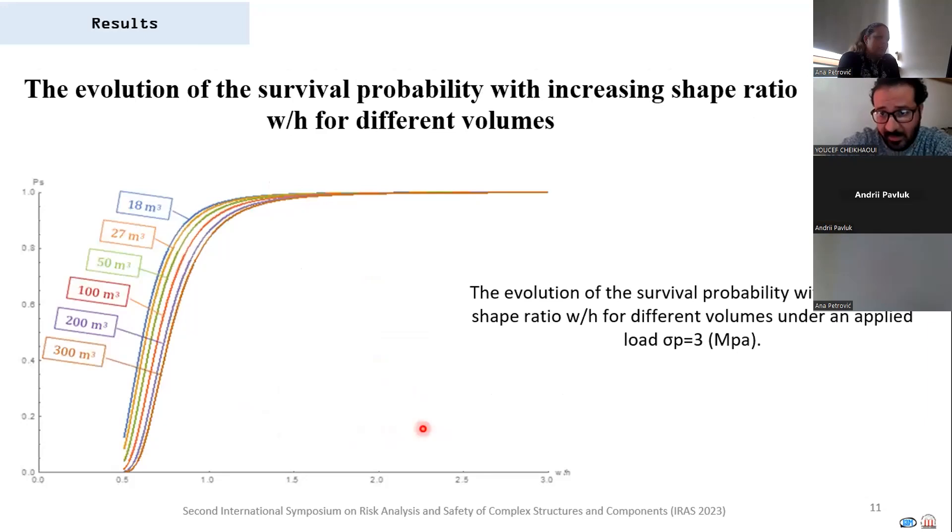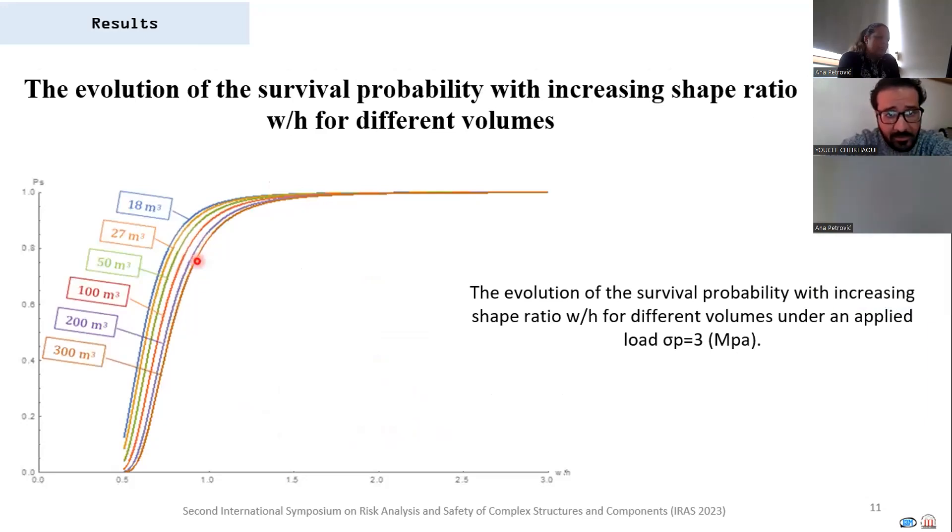We present in this figure the evolution of the survival probability with increasing shape ratio W/H for different volumes. We notice that there are critical values of W/H ratio for each volume of the pillar where the survival probability is stabilized to one.